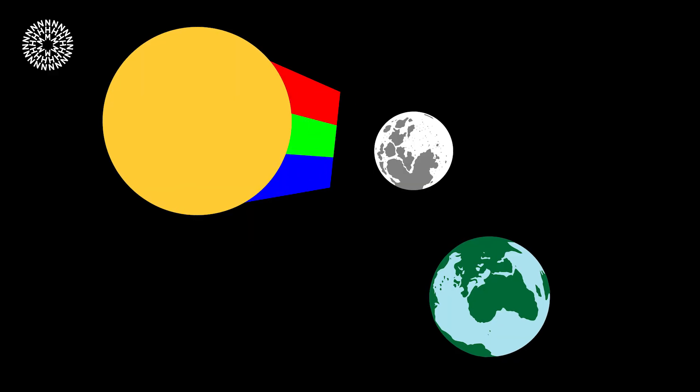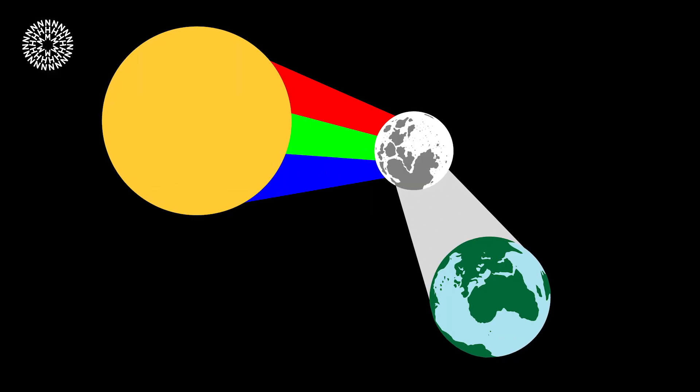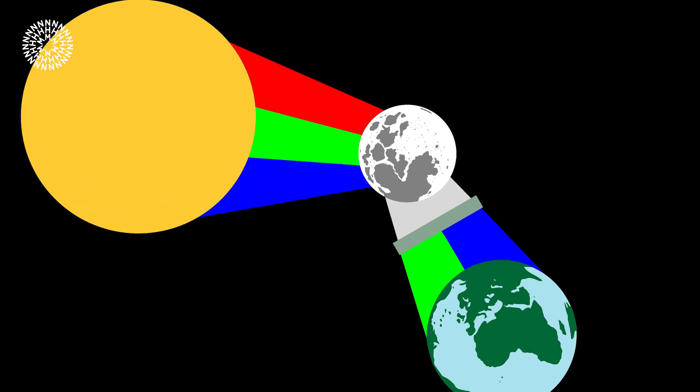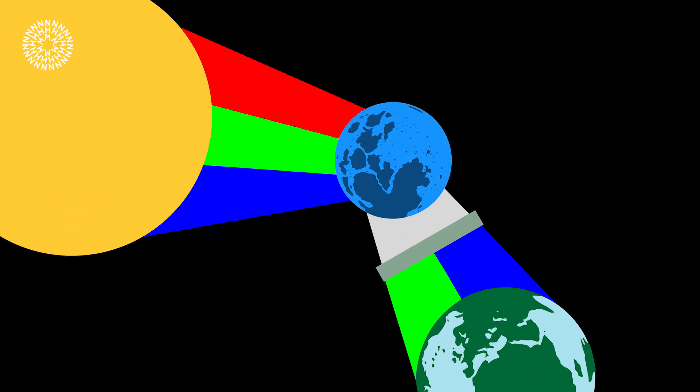But it can also happen that the moon actually appears a different color than normal. So the moonlight we see is reflected white light from the sun, and if there's something in the way that blocks the red light, the moon can appear blue.